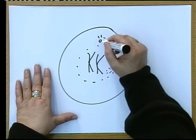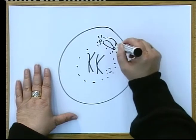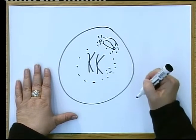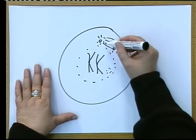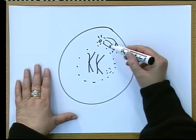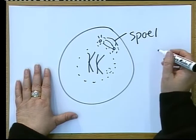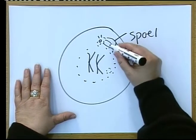The centriole duplicates itself and starts to move to opposite poles, the two centrioles, with cytoplasmic threads. In other words, threads of cytoplasm, which we call the spindle. And this is a spindle thread.